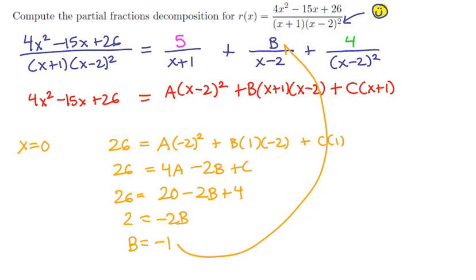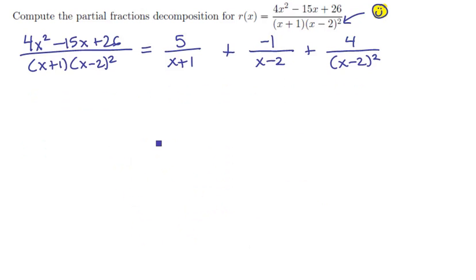If we replace that in the top, we have a minus 1 here, and now we have our partial fractions. This can be simplified or expressed as 5 over x plus 1 minus 1 over x minus 2, plus 4 over x minus 2 quantity squared. And that's our partial fractions decomposition.